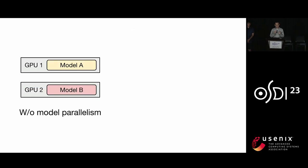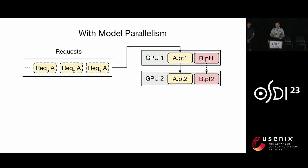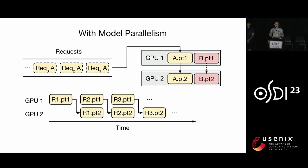However, with model parallelism, we can put both models on both GPUs. For example, with pipeline parallelism, we can put the first half of the layers of both models on GPU 1 and the second half of the layers on GPU 2. For a burst of model A's requests, we can execute them in a pipeline fashion — after GPU 1 finishes processing the first half of one request, it can send the intermediate results to GPU 2 and immediately start on the next request.